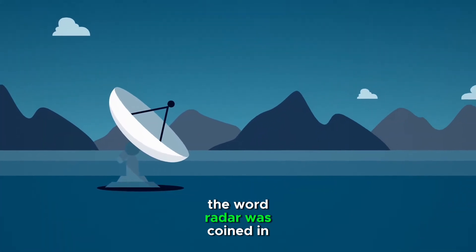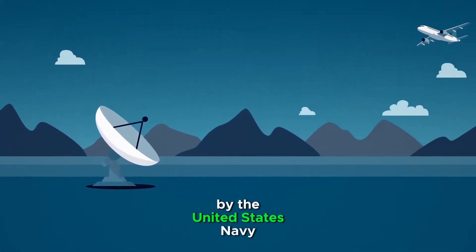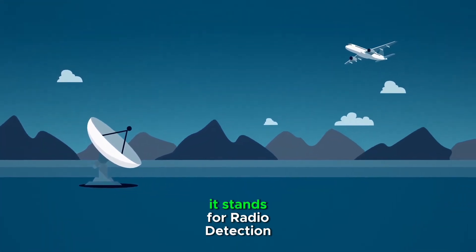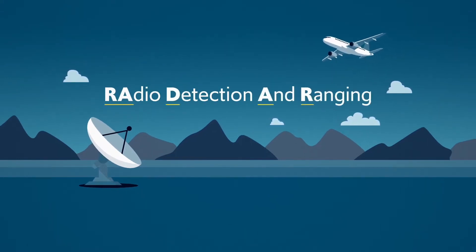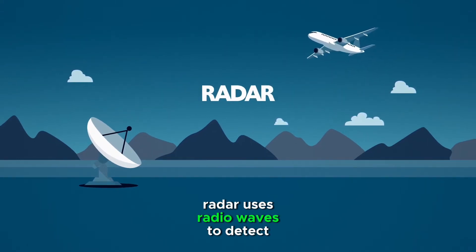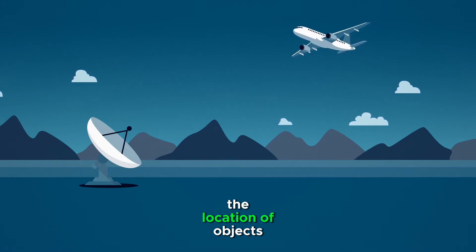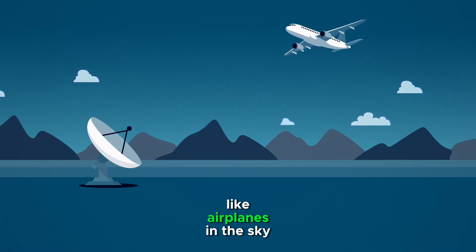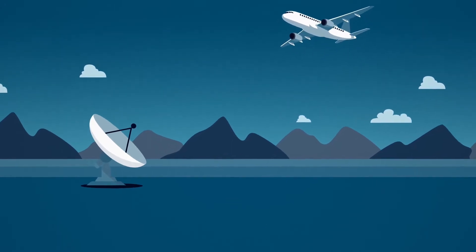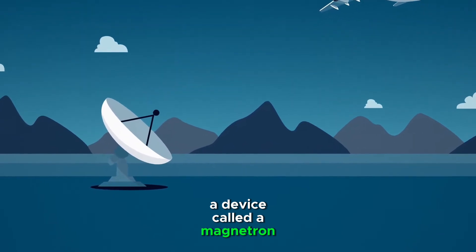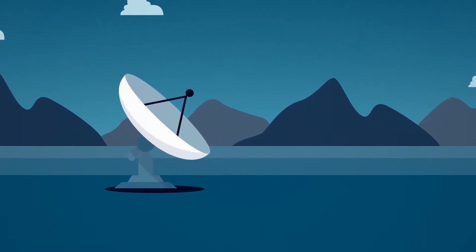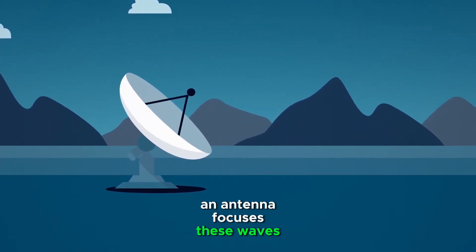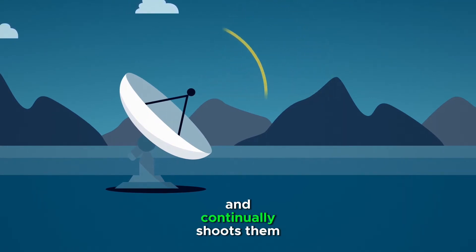The word radar was coined in 1940 by the United States Navy. It stands for Radio Detection And Ranging. Radar uses radio waves to detect the location of objects like airplanes in the sky. A device called a magnetron generates high-powered radio waves, and an antenna focuses these waves into a narrow beam, continually shooting them into the sky.